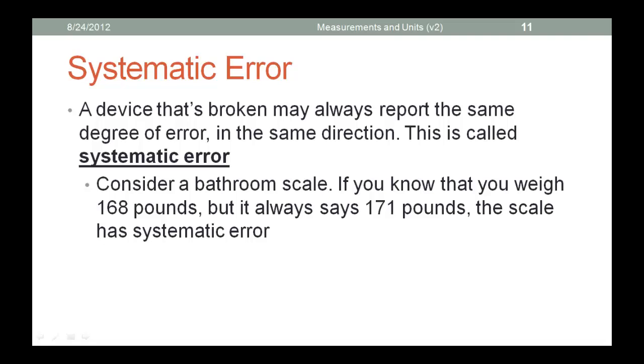Unfortunately, you may not even know that the error exists to correct it. Consider a bathroom scale. If you know that you weigh 168 pounds at the doctor's office, for example, but your home scale always says 171, the scale has a systematic error. It's always reading the wrong way every time.